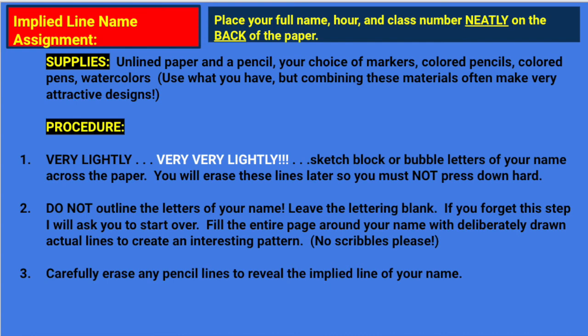Now the procedure. Very lightly — very, very lightly — sketch block or bubble letters of your name across the paper. You're going to erase these lines later, so you must not press down hard. Do not outline the letters of your name; leave the lettering blank. If you forget this step, I'll ask you to start over. Fill the entire page around your name with deliberately drawn actual lines to create an interesting pattern — no scribbles. When you finish filling in all the spaces with line and leaving your name blank as negative space, carefully erase any pencil lines around your name to reveal a clear representation of your name or initials.